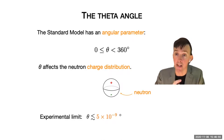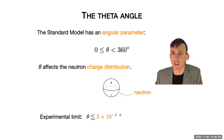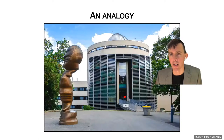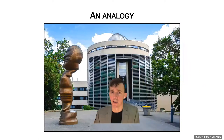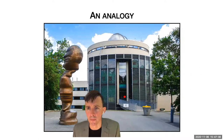Presently, we know that this angle is no larger than five parts in a billionth of a degree. This is a stunningly tight bound for something that had no reason to be this small. To appreciate just how tight this bound is, consider an analogy.